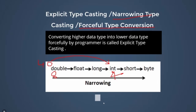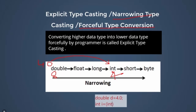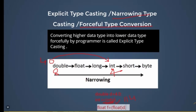For example, if we have a double variable d with the value 4.0 and we want to convert it into int, in that case we have to write int first and then the double is going to be converted into int. So we write int and then d — the value of d will be converted into integer.